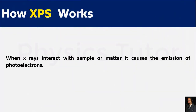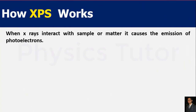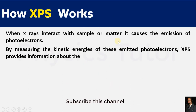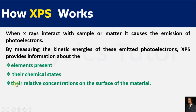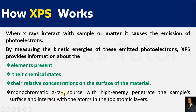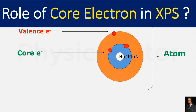Now we will see the working of XPS. X-rays are highly energetic rays; when incident on a sample surface, electrons absorb energy and move to upper orbits. By measuring the kinetic energies of these emitted photoelectrons, XPS provides information about the elements present, their chemical state, and relative concentration on the surface. Monochromatic X-rays are used because they are highly energy-penetrable and interact with atoms in the top atomic layers.